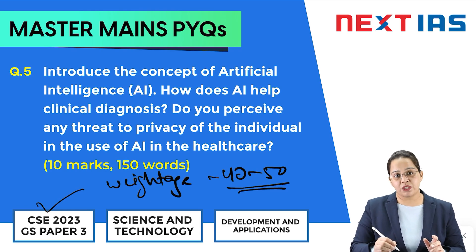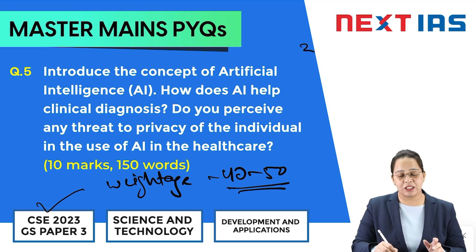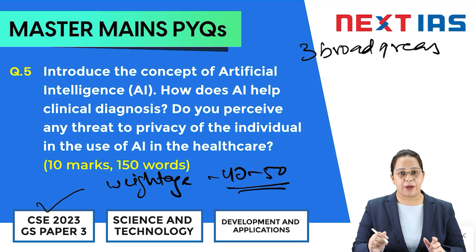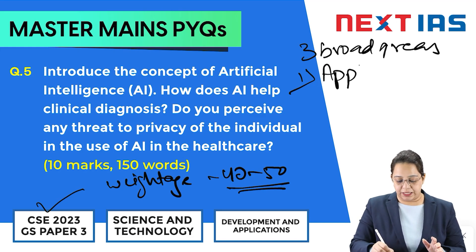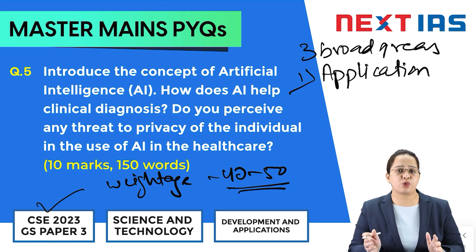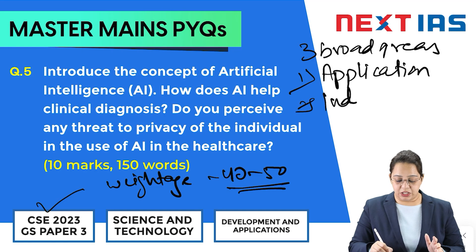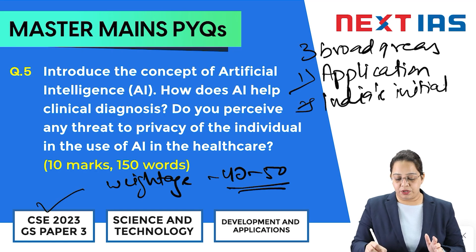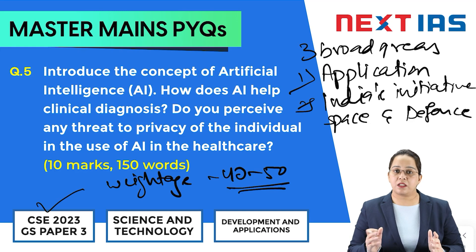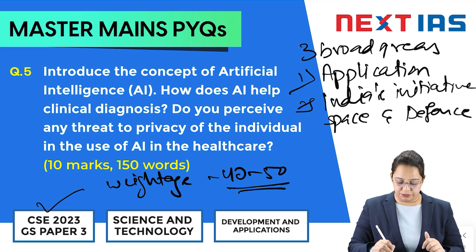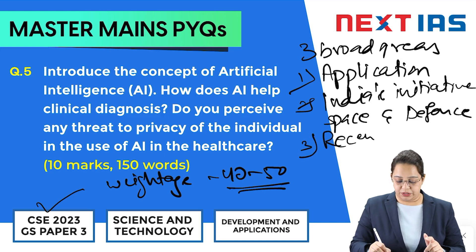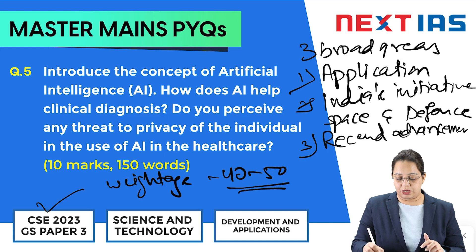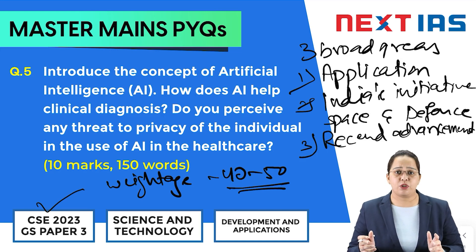If you have gone through the previous year questions of the Science and Tech part, there are basically three broad areas from which UPSC asks questions in the Mains examination. First is application of basic sciences — a cellulose question was asked in the 2022 examination. Second is India's initiatives in space and defense — a Chandrayaan question was asked in 2023. Third is recent advancements like Artificial Intelligence and Biotechnology.